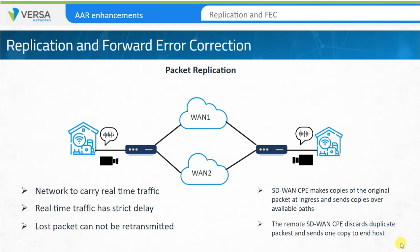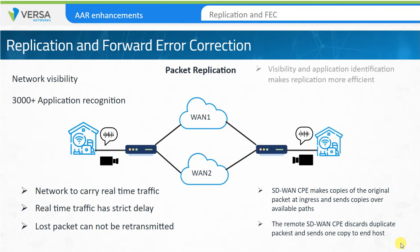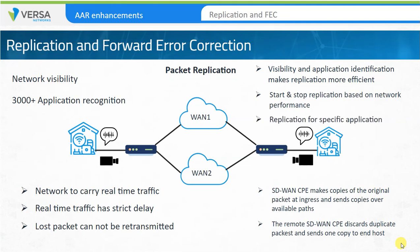A smart SD-WAN solution doesn't just provide replication capabilities, but can also provide greater control over replication. The visibility of link behavior using smart SLAs and the ability to identify applications — these two capabilities allow replication to work more efficiently. This visibility allows replication to start only when link performance drops below a programmed threshold and to stop when a programmed acceptable threshold is reached. At the same time, application awareness allows the administrator to select which types of traffic are replicated based on the application type.